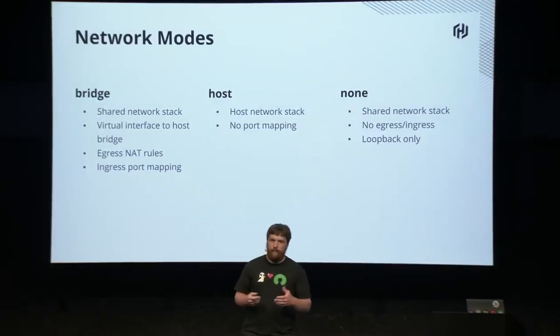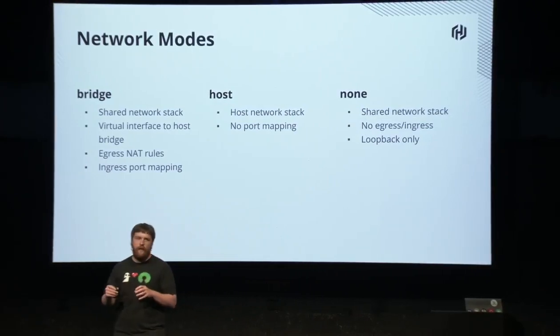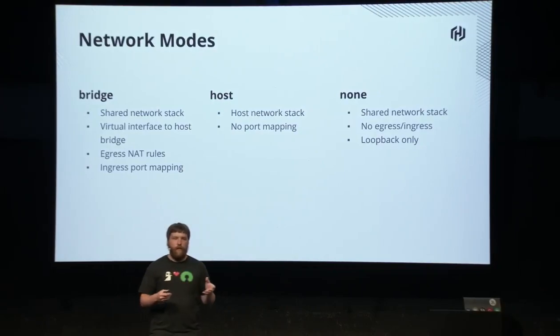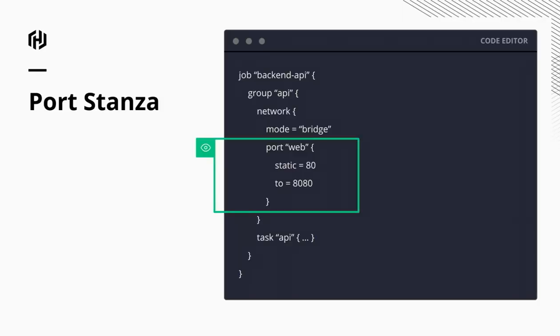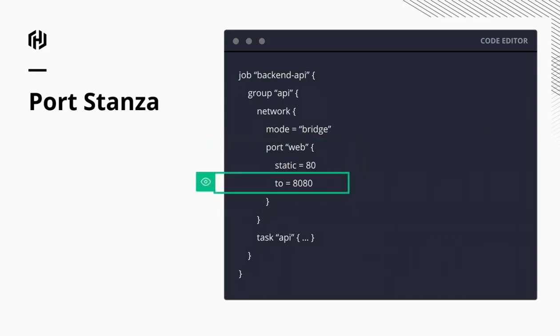Bridge mode gives you that shared networking namespace — it creates a virtual interface and bridges it with the host, and creates firewall rules so we can have NAT out to the world inside the cluster. We also support port mapping so you can forward ports from the host inside your namespace. The port stanza is the same as before, except we've added a 'to' field. So this port 'web' stanza is saying: allocate a port labeled 'web', assign it to static port 80 on the host, and map it into the namespace to port 8080.